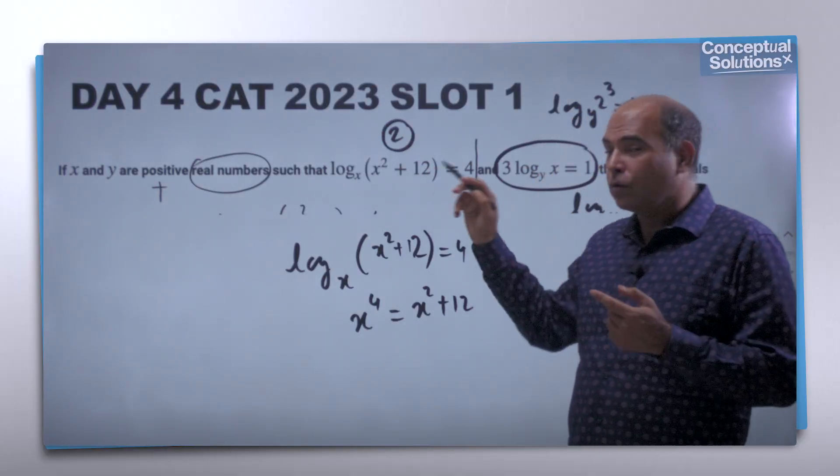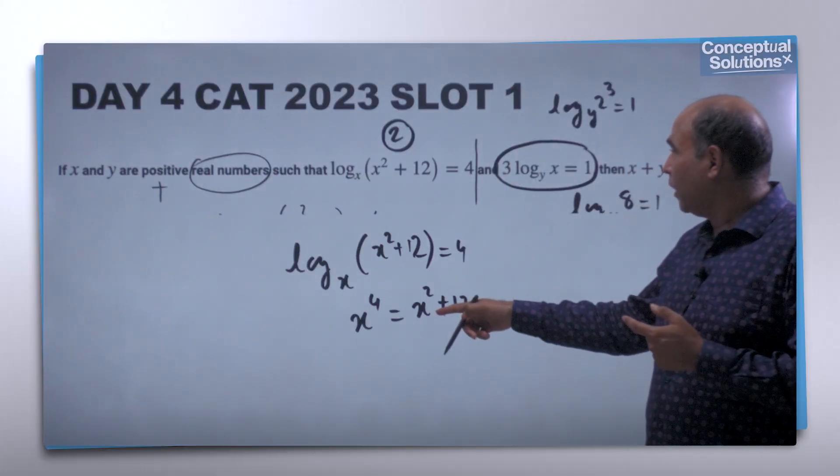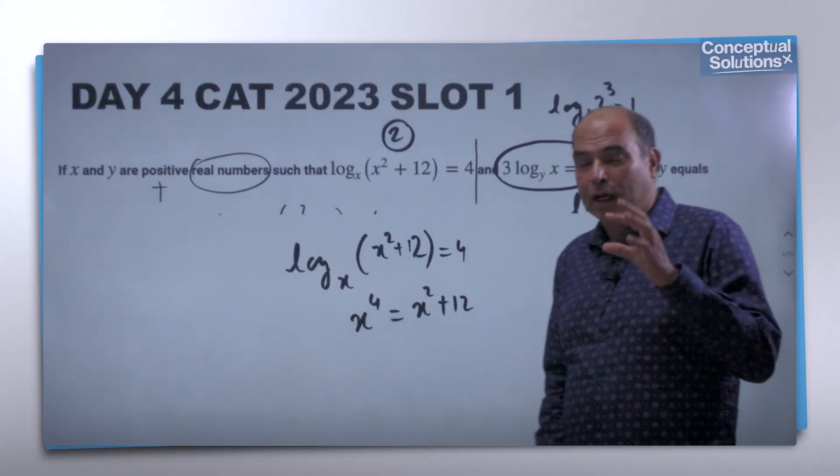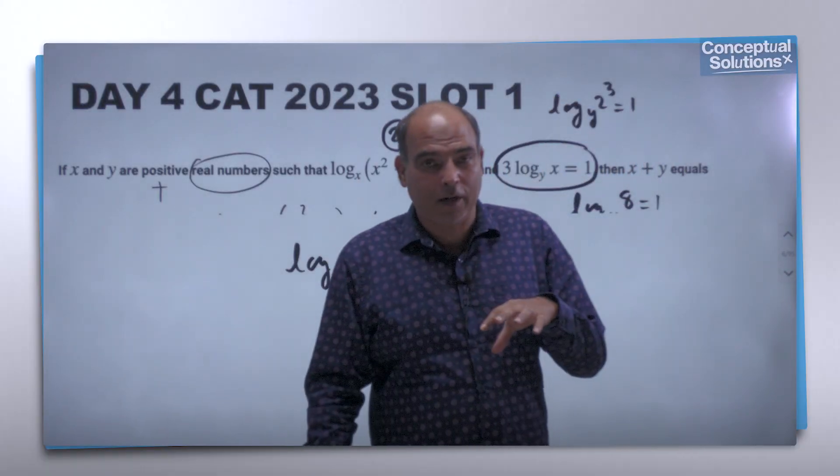Once you get x = 2 this way, then the problem solved. This will barely take you 20-30 seconds, so you can actually solve this entire question under a minute to get x + y = 10.